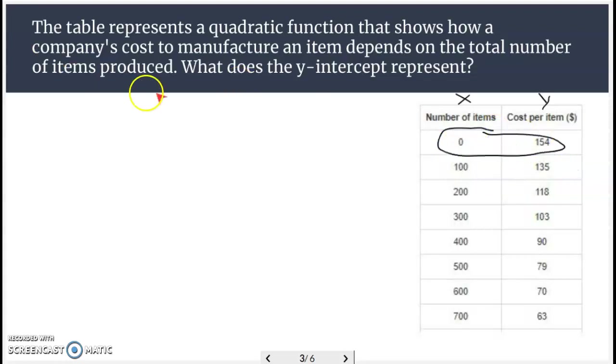And the y-intercept is happening right here. Now, looking at the table, you can kind of see that the more items they produce, the cheaper it is per item. That's why it's always cheaper to buy in bulk, because the manufacturer can sell more, larger quantity for a lower cost.